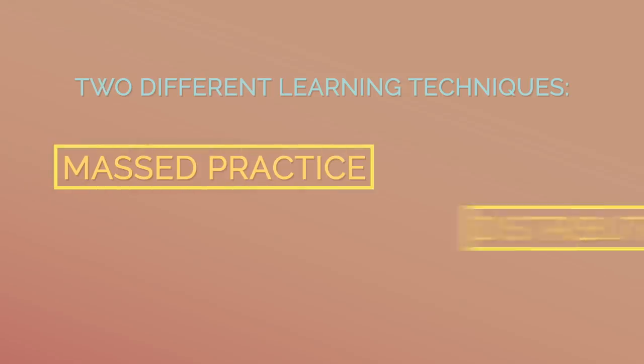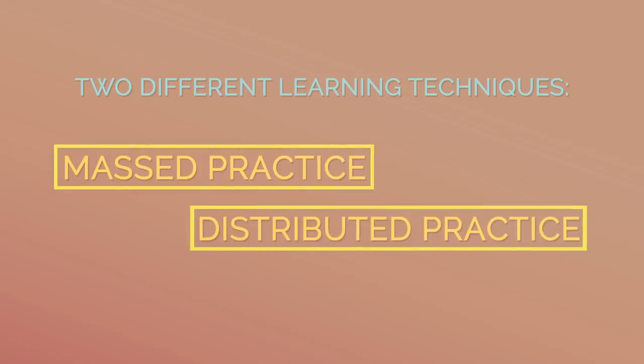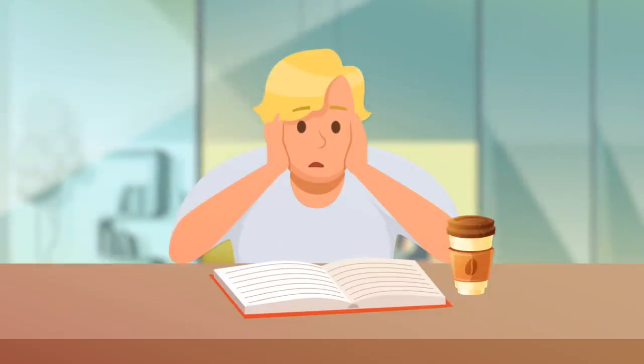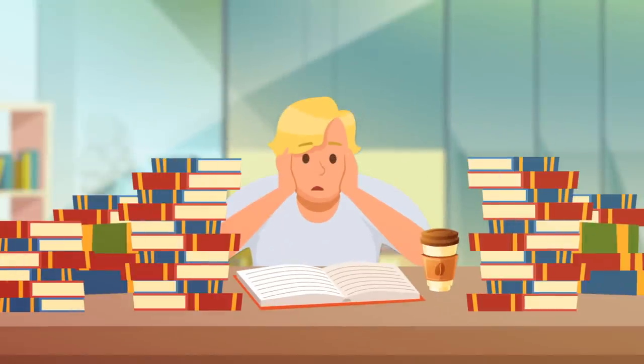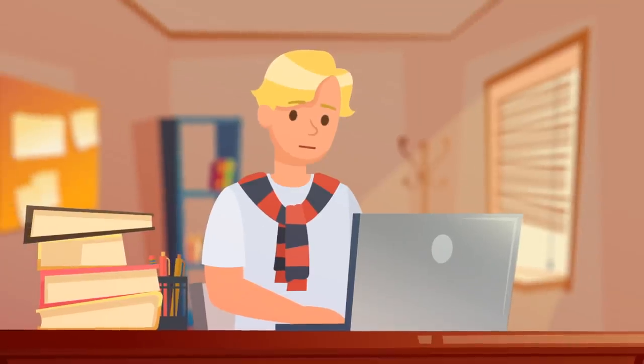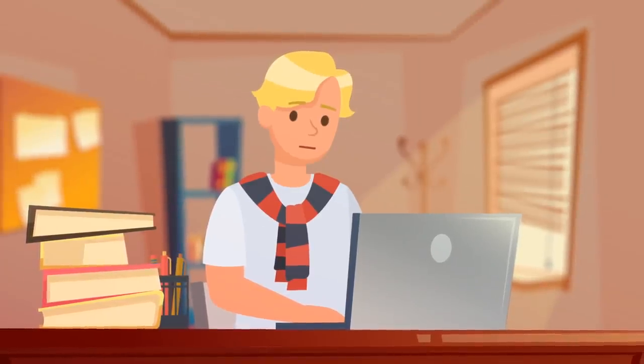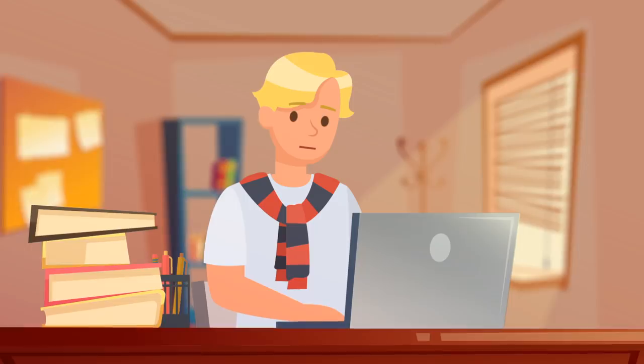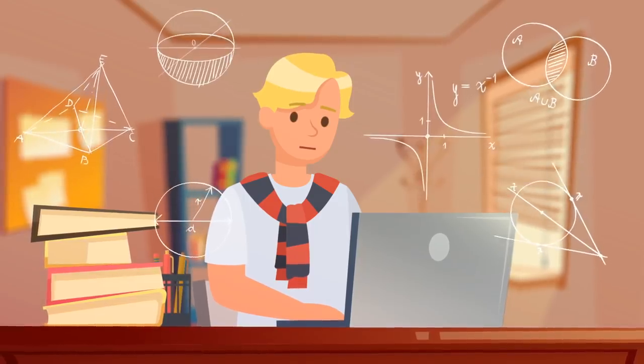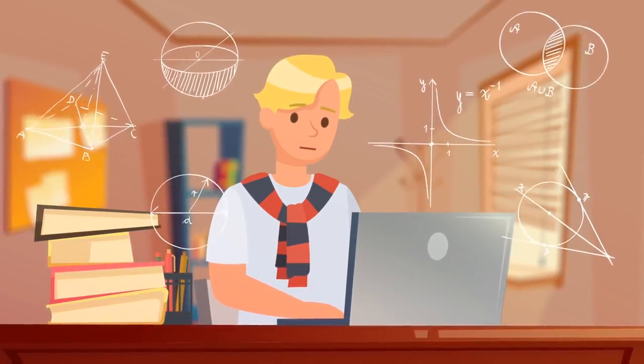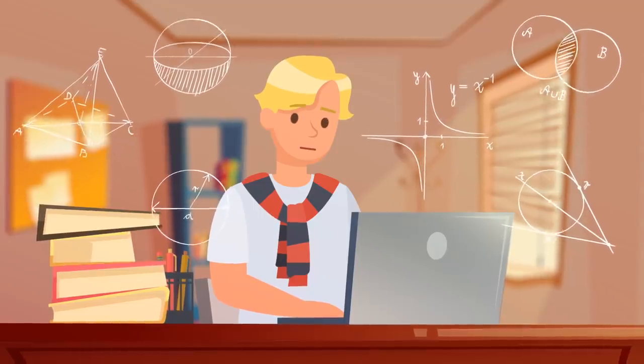To test this, researchers looked at two different learning techniques: mast practice and distributed practice. Think of mast practice like cramming. After being exposed to a stimulus, you try to retain all of that information by studying it immediately afterwards. And just like cramming, it typically doesn't work. Distributed practice is when you spread the learning process out over several shorter sessions. By studying the same thing each time, you actually absorb the information so you can recall it whenever necessary.